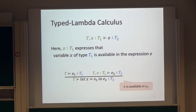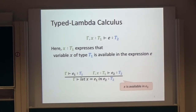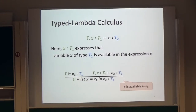This is the type judgment rule for let expressions. According to this type judgment rule, a let expression can be typed under gamma if expression E2 can be typed under gamma and X colon T1. In other words, in the expression E2, we can use a variable X in addition to variables of the current scope.